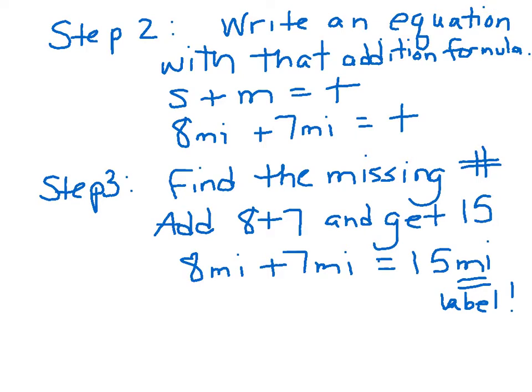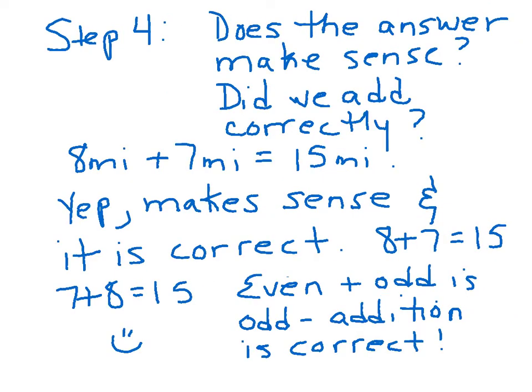Now you get to apply your skills. You want to write an equation with that addition formula. S plus M equals T. 8 plus 7 equals T total. Your next step, find the missing number. Add 8 plus 7 and get 15. 8 miles plus 7 miles equals 15 miles. By the way, don't forget to label. Does that answer make sense? Did we add correctly? 8 miles plus 7 miles equals 15. Yep, makes sense and it's correct. 8 plus 7 is 15. 7 plus 8 is 15. This is kind of an even and odd thing. If you have an even number and an odd number, your answer is going to be odd. The addition is definitely correct.